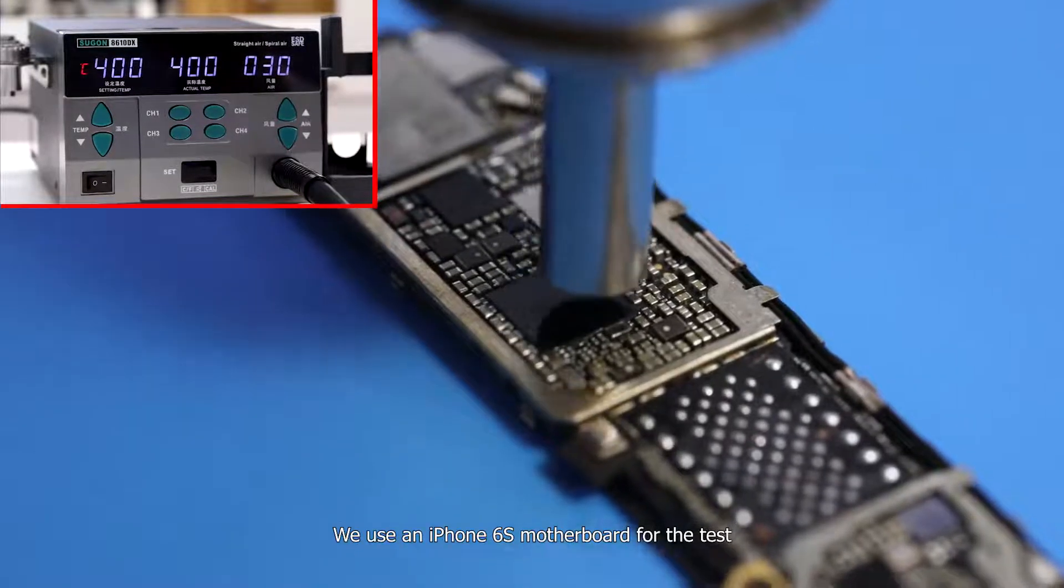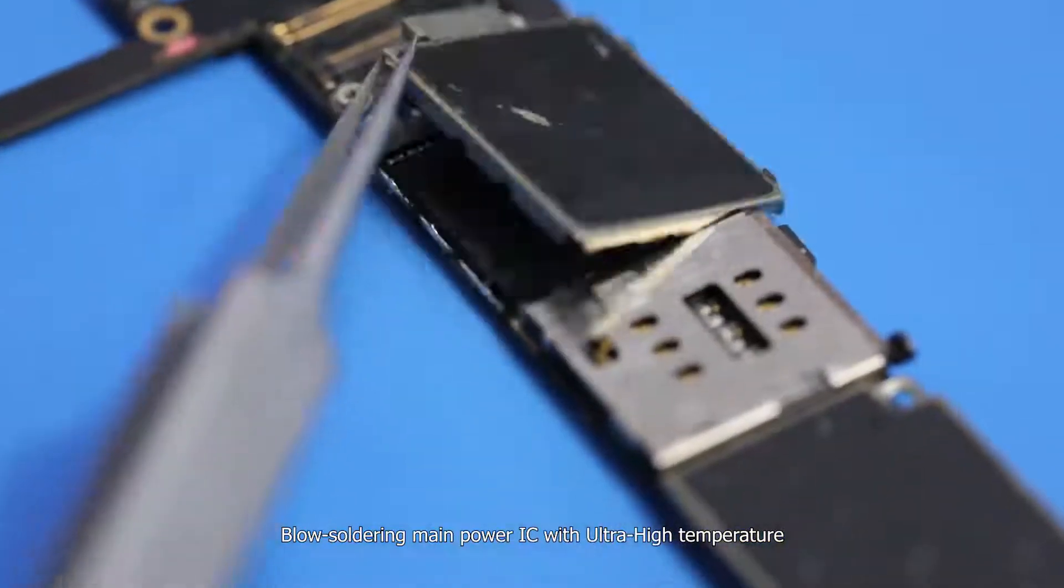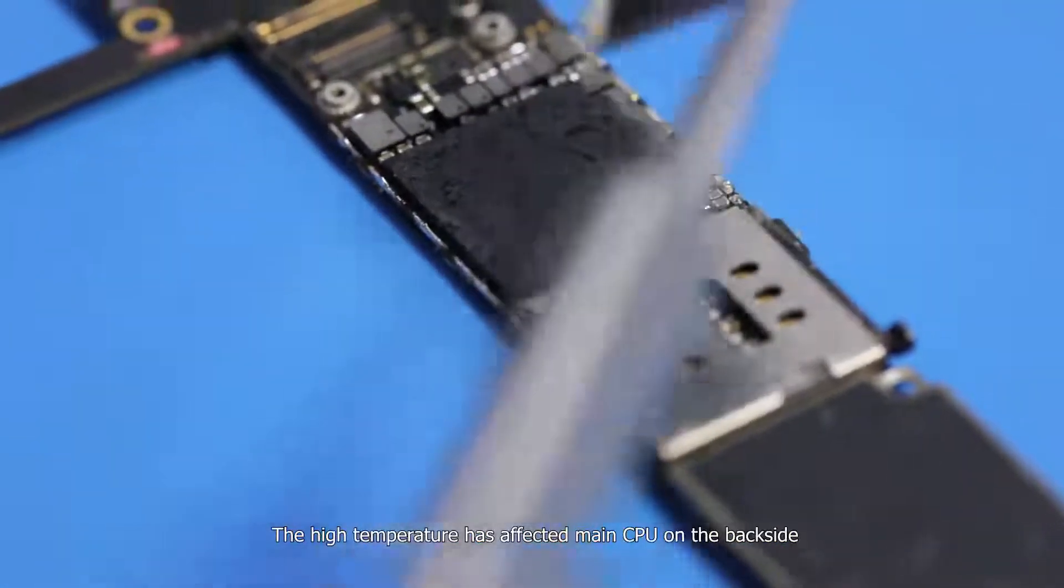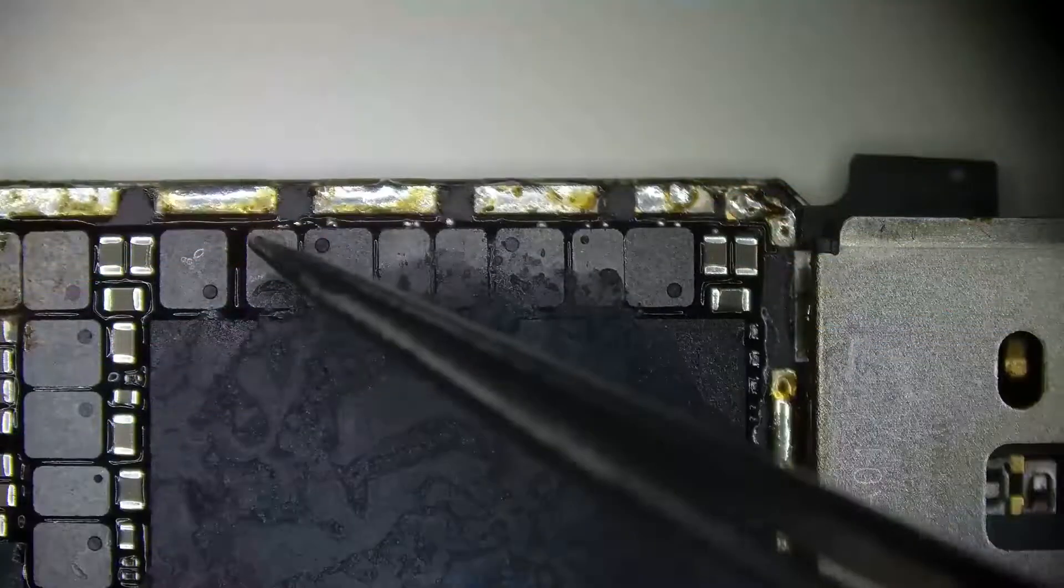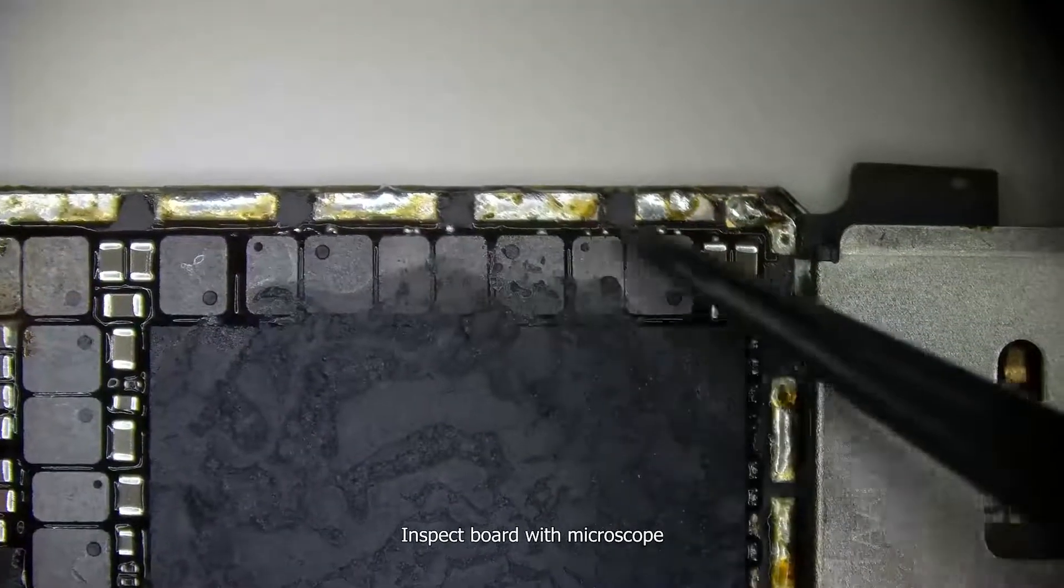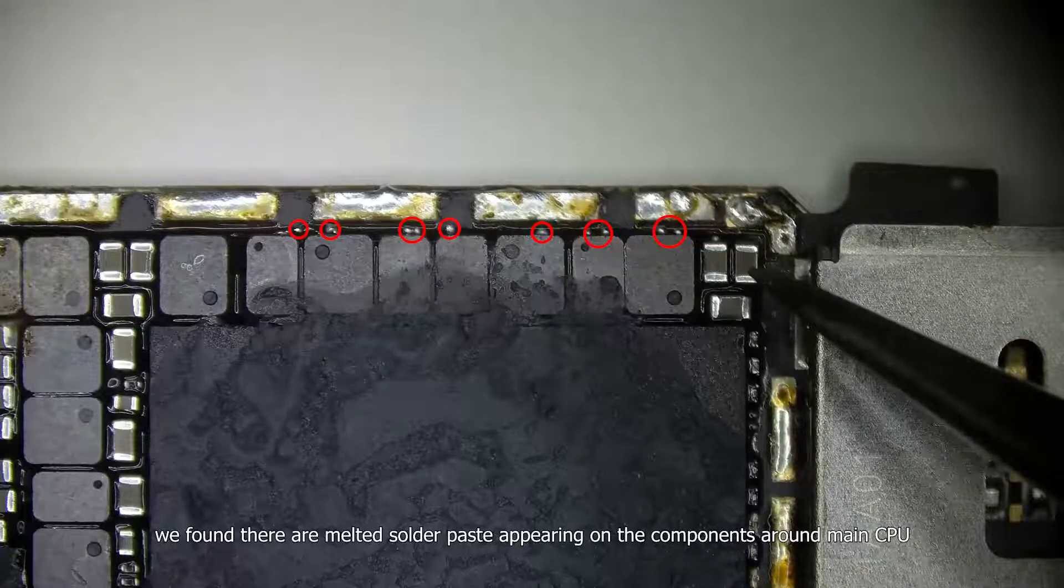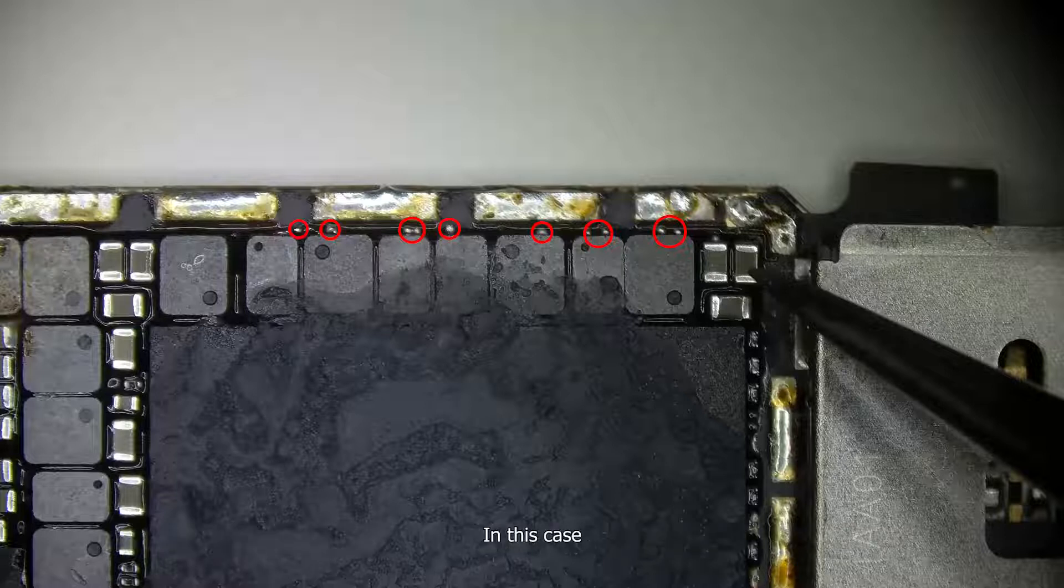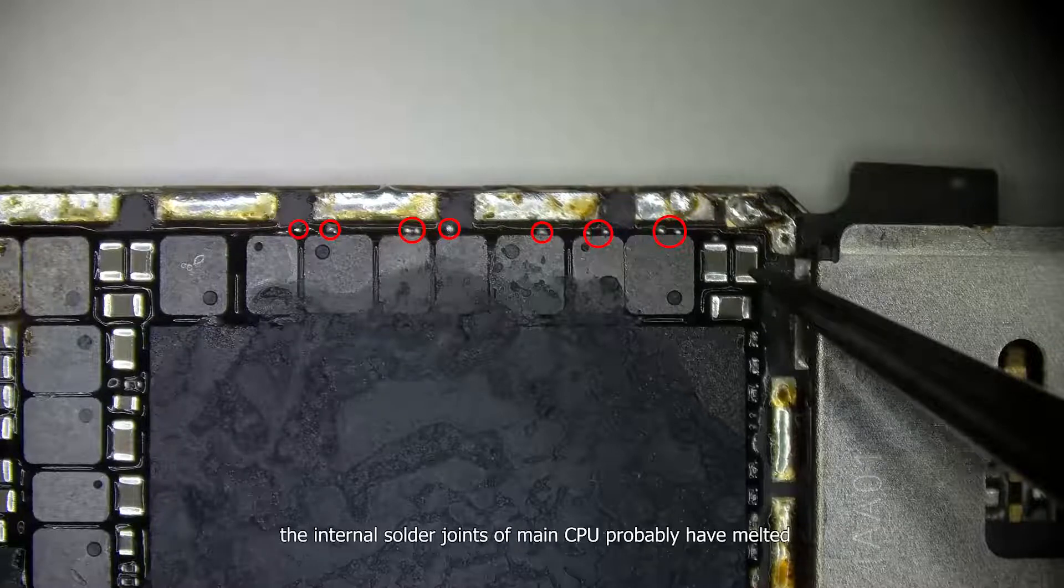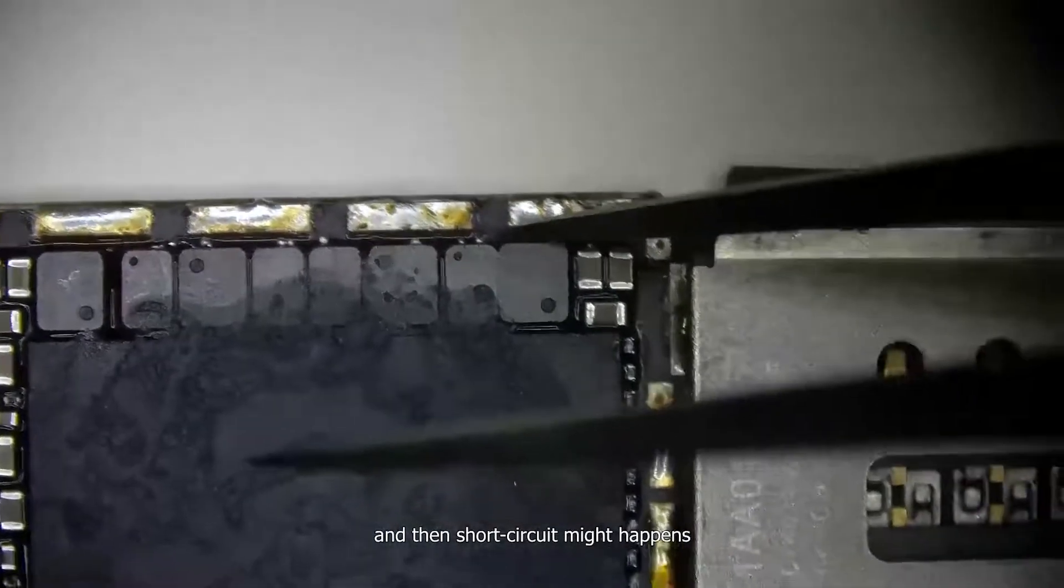We use an iPhone 6S motherboard for the test. Blow soldering main power IC with ultra high temperature. The high temperature has affected main CPU on the backside. Inspect board with macroscope. We found there are melted solder paste appearing on the components around the main CPU. In this case, the internal solder joints of main CPU probably have melted and then short circuit might happen.